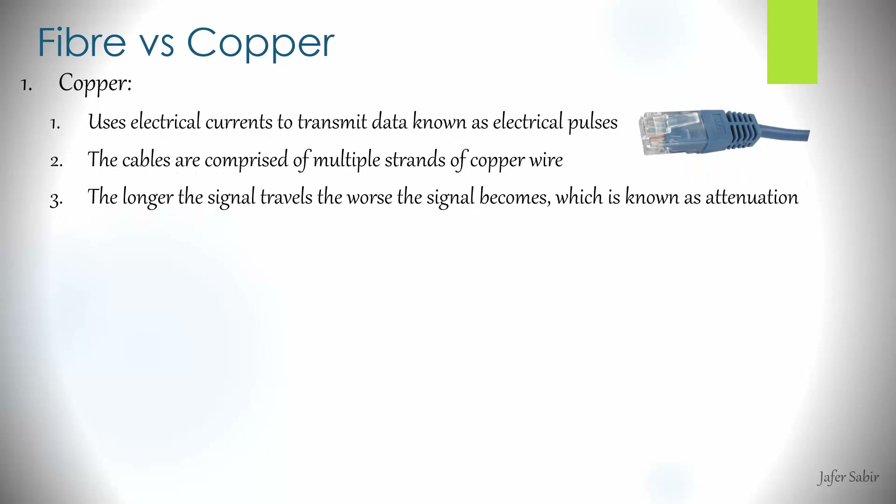With copper wires, copper wires use electrical currents to transmit data, known as electrical pulses. The cables are comprised of multiple strands of copper wires with four pairs of wires twisted together, and the longer the signal travels the worse the signal becomes, which is known as attenuation.